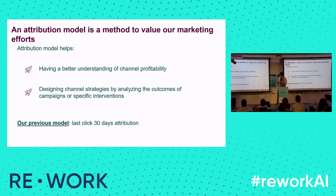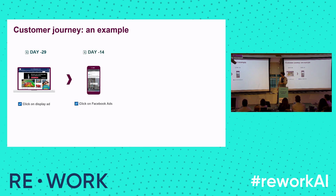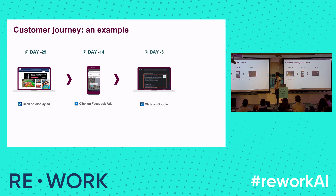The attribution model allows us to understand each channel's profitability and therefore create custom strategies for each channel. Our previous method was the last-click attribution model. Let's take a concrete example: someone clicks on a display ad — a banner on a website — on day minus 29. Two weeks later, he goes on Facebook and clicks on another ad. Then on day minus 5, he searches 'carpooling London Manchester' on Google.